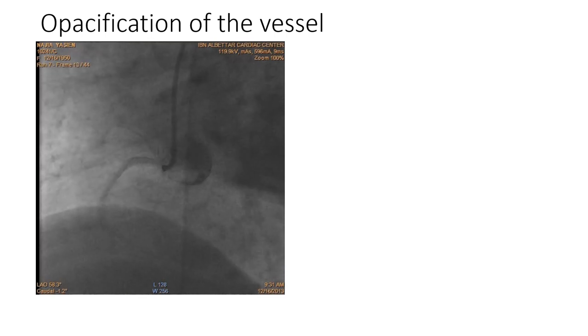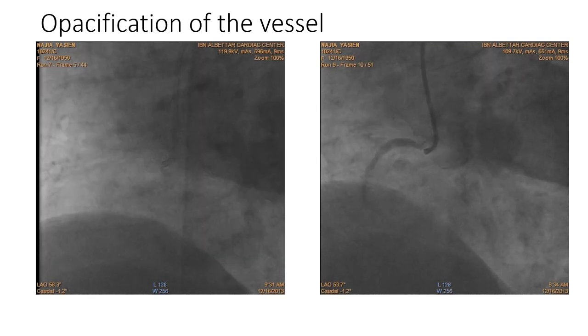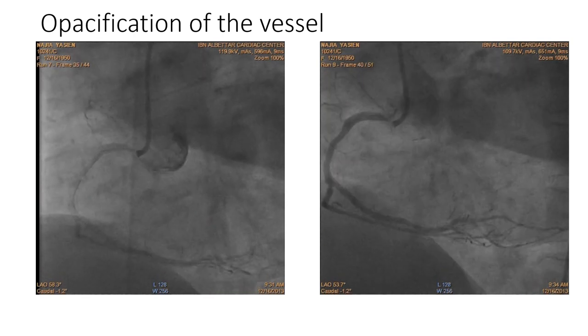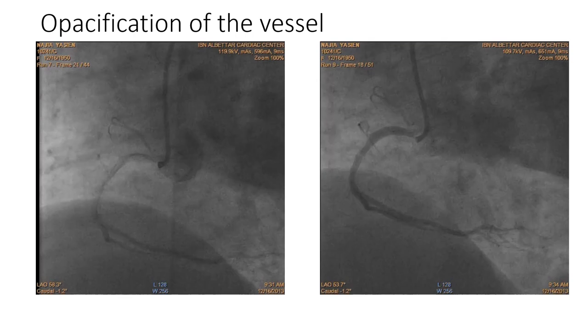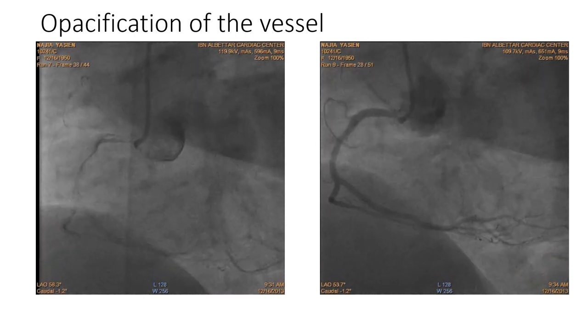Complete opacification of the artery is important to avoid misinterpretation of lesions. In this left-sided video, there seems to be a filling defect in the RCA at the mid part stent. Actually, this was due to streaming of the dye. In the right-sided video, proper opacification of the artery was done and showed that the artery is clear without filling defect.